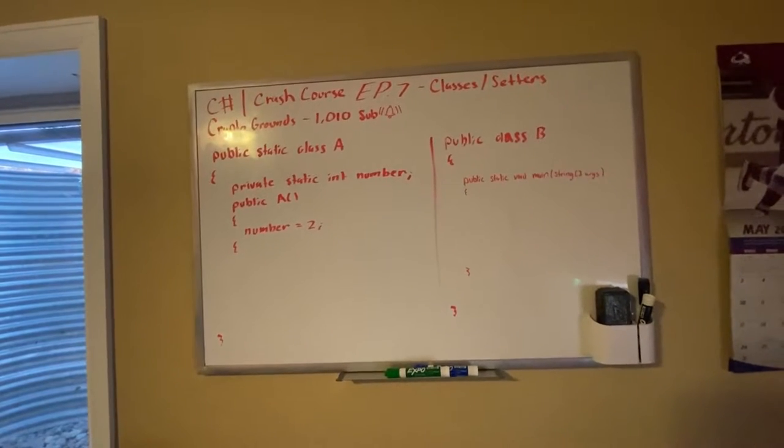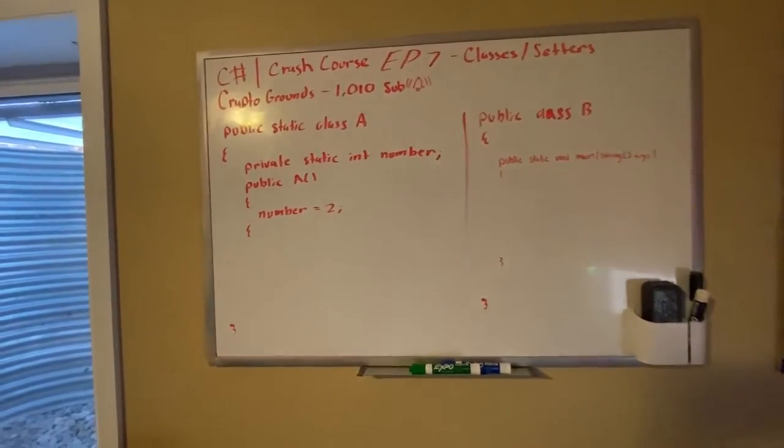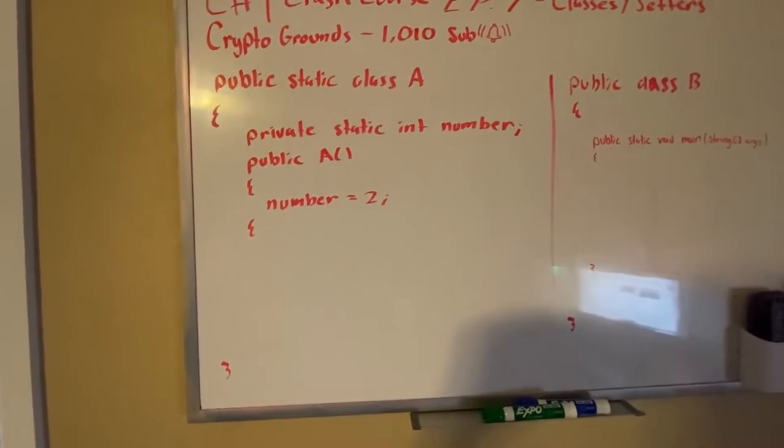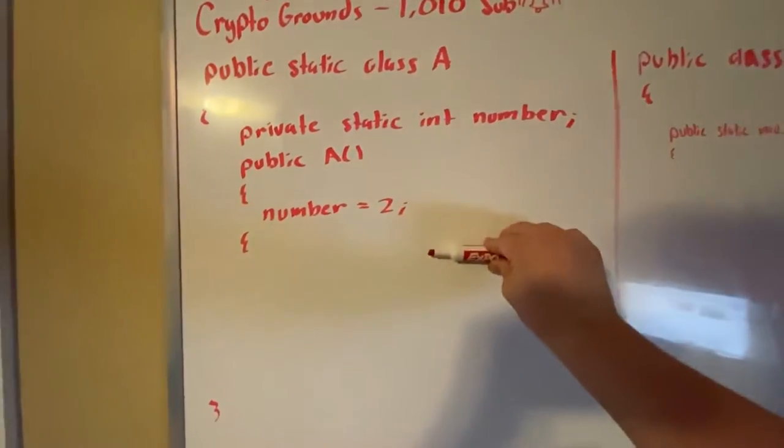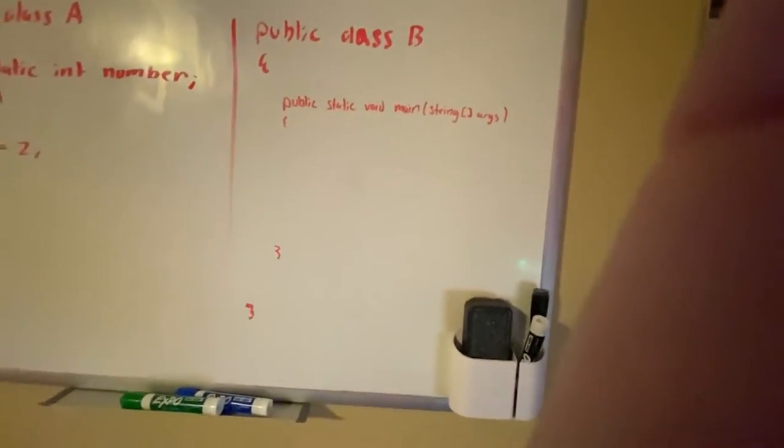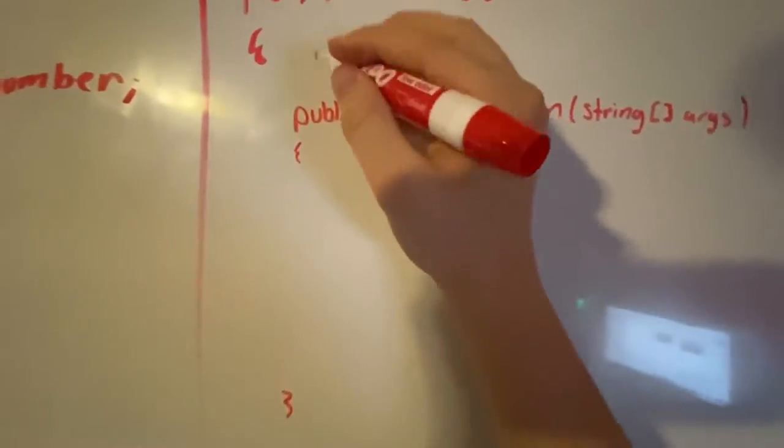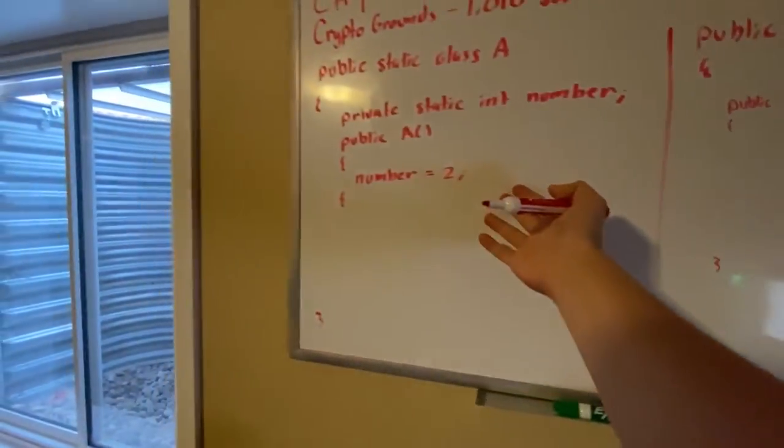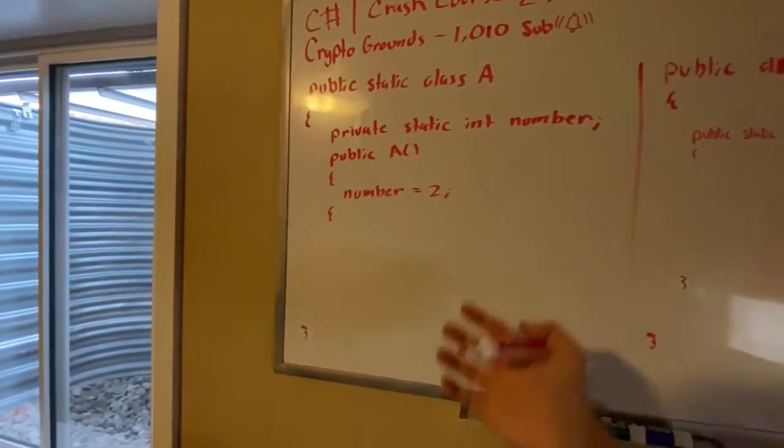So here we have our setup pretty much the same thing as last time, except I added a constructor method where we can pre-define it as 2. So what we can do here is we can create an object. Obviously this is static, so this can be accessed anywhere.